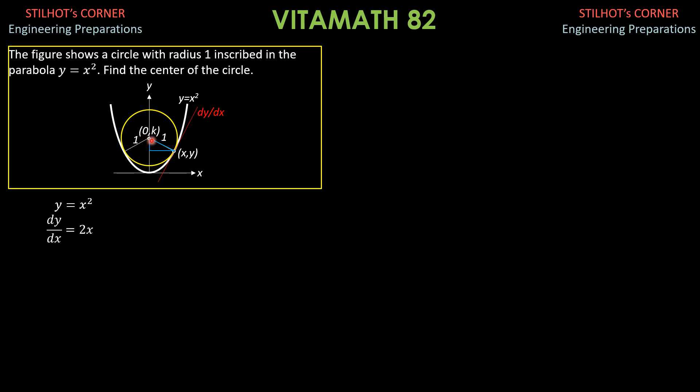So, the vertical side of this blue right triangle is, in general, y minus k, this one. This horizontal is x minus 0, or in general, x minus h. Then, this is the radius, which is 1. So, that's why x minus h quantity square plus y minus k quantity square equals r square. So, in this problem, x square, x minus 0 square plus y minus k quantity square equals 1 square. So, this is from Pythagorean theorem.